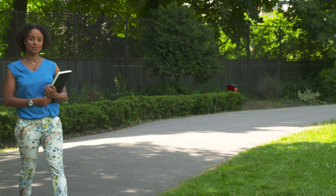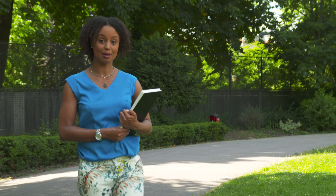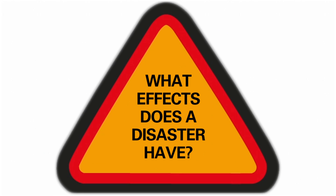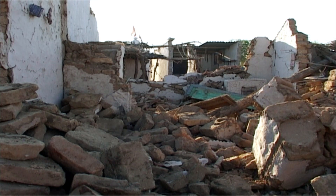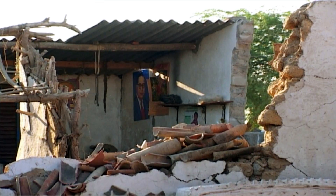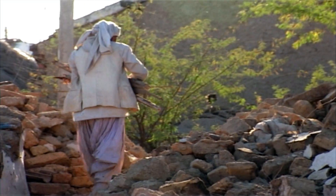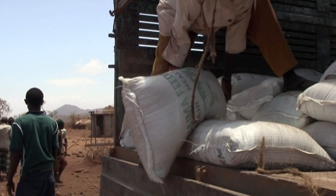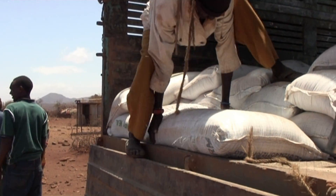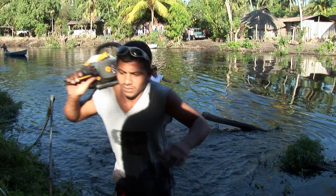Disasters can come in all different shapes and sizes. Anything that causes harm to people or the places where they live can be called a disaster. Some disasters are small and affect just a few people, whereas others are much bigger. This film will look at some of the bigger types of disaster. Disasters of any size can have a terrible effect in the places where they happen. They can cause death and injury to people and damage and destruction to homes and places. But whatever the type of disaster, things can be done to help reduce the effects on people when they do happen, and to help people prepare for that type of disaster in the future.